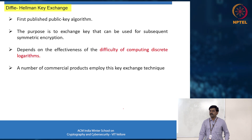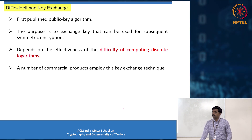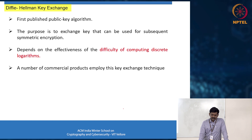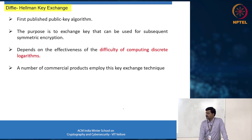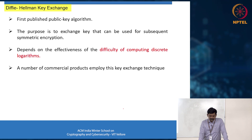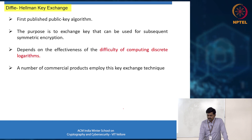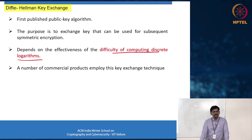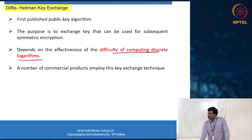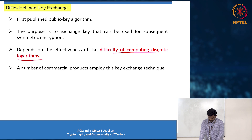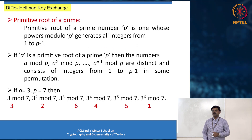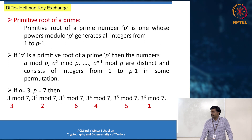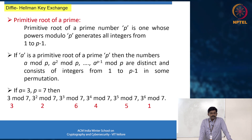Next is another popular public key cryptography algorithm: Diffie-Hellman key exchange. Similar to RSA, Diffie-Hellman is rooted in a fundamental mathematical problem — there is no computationally feasible algorithm to calculate discrete logarithms. Interestingly, Diffie-Hellman is the first published public key algorithm, predating RSA. Diffie-Hellman requires understanding one particular mathematical concept: the primitive root of a prime number.